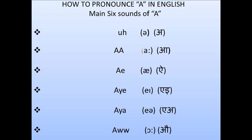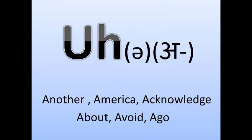We can see this in detail. Firstly, we have this phonetic symbol. This is the Hindi equivalent. This is a soft sound — we use the soft palate to speak it. Examples of words with this sound include: another, America, acknowledge, about, avoid, and ago. In all these words, the first letter A makes this sound.